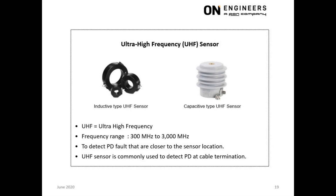This slide is about UHF sensors for online PD measurement. UHF stands for Ultra High Frequency, ranging from 300 to 3000 MHz. UHF PD sensors are used when you want to localize the PD source — if PD is detected by a UHF sensor, it means the PD is near the measurement point. UHF PD sensors are very suitable for detection of PD at cable terminations, and premature failures of cable terminations are very common in Singapore.